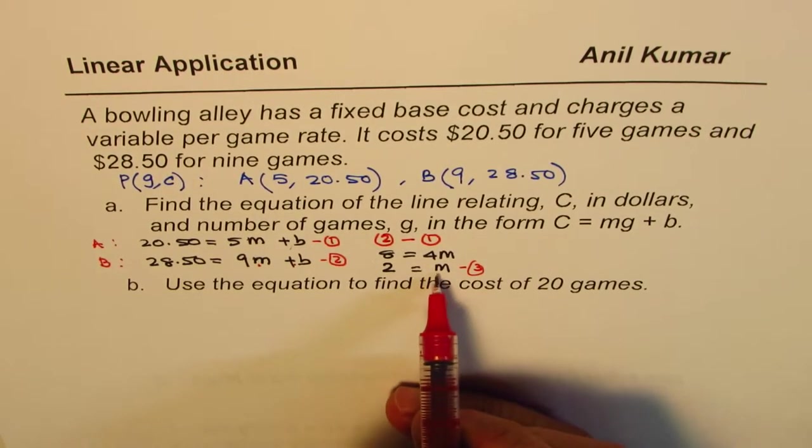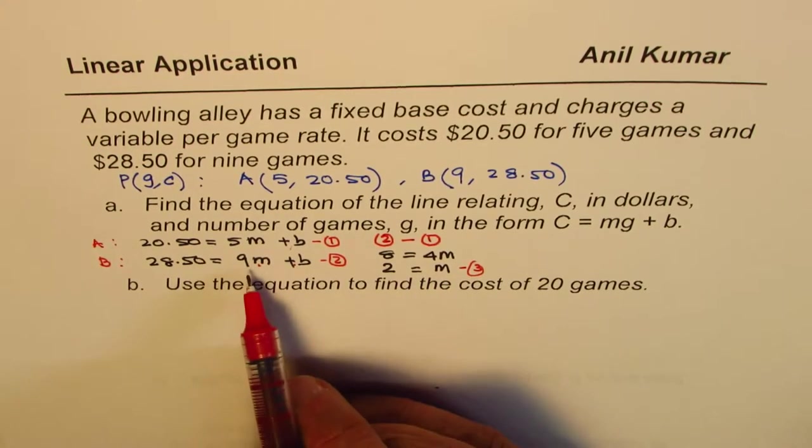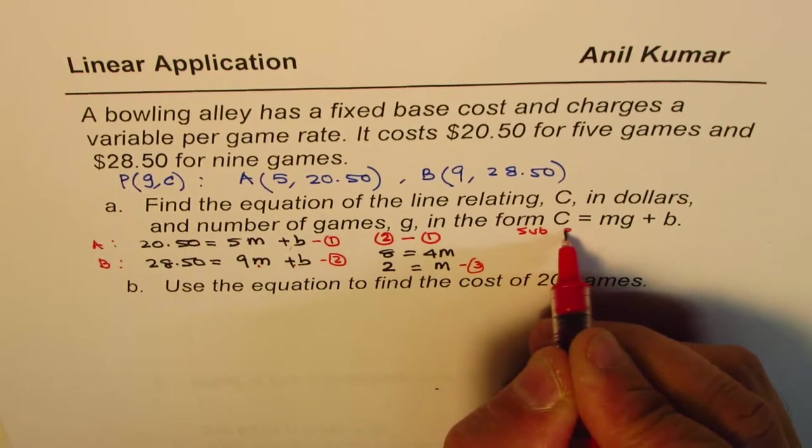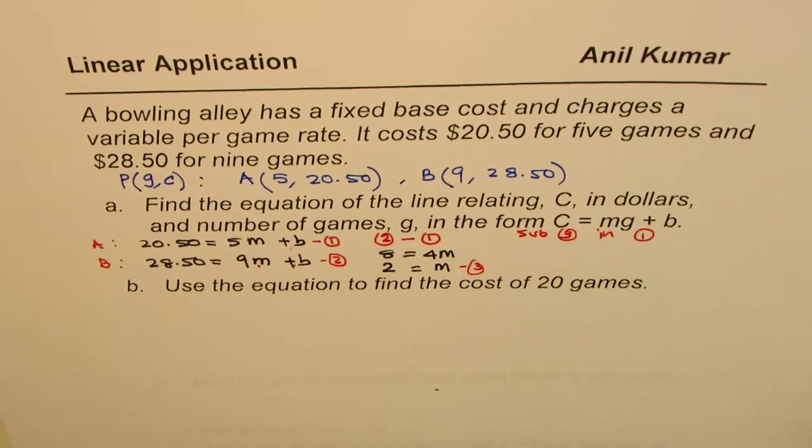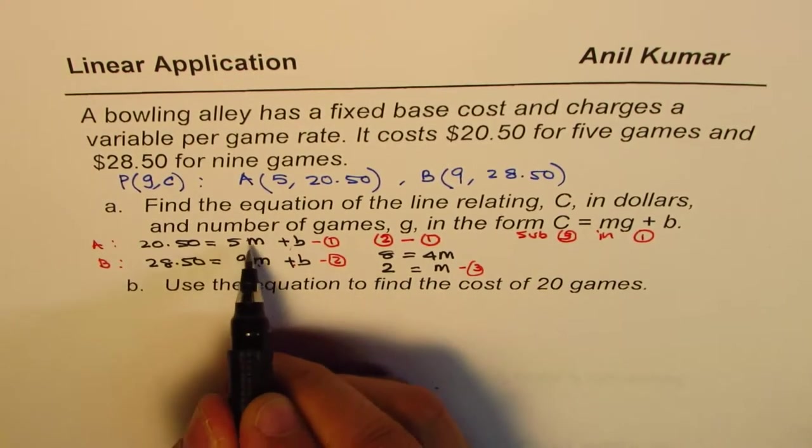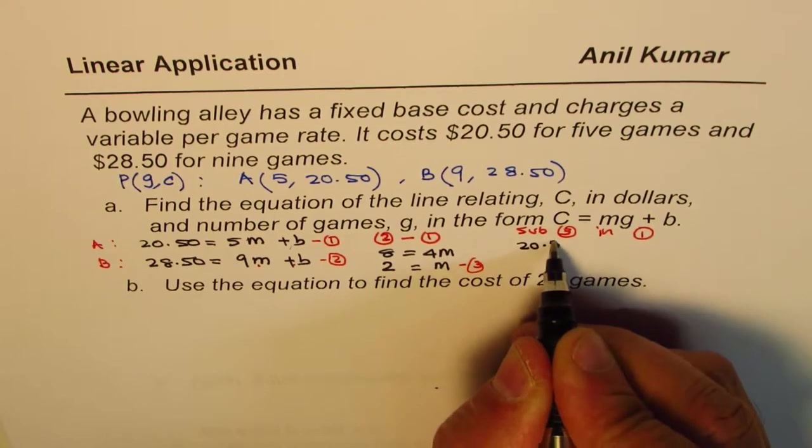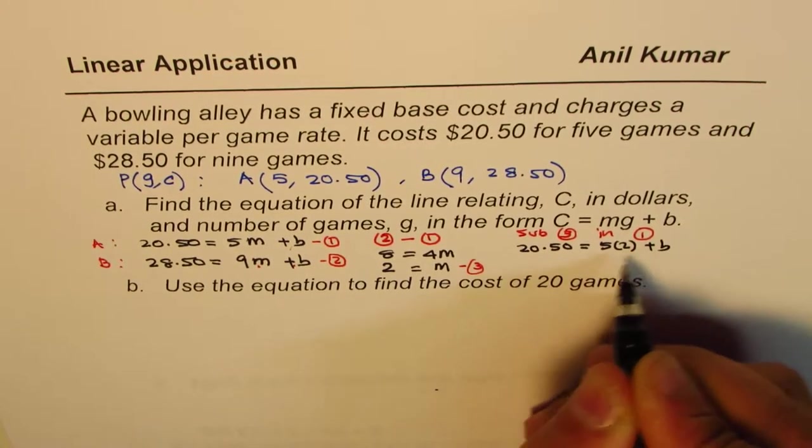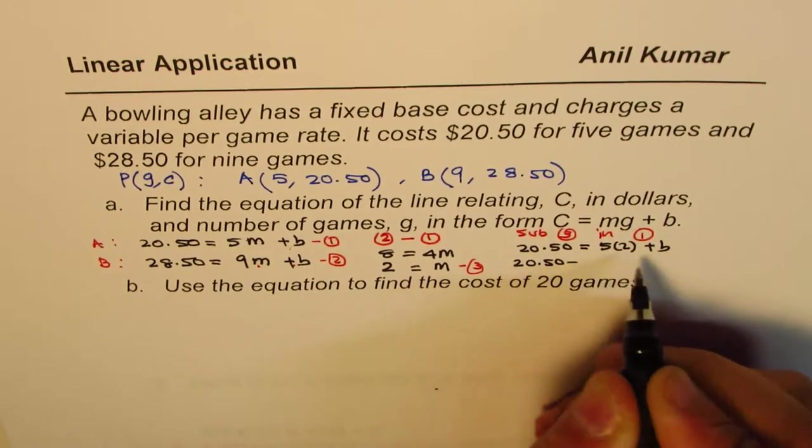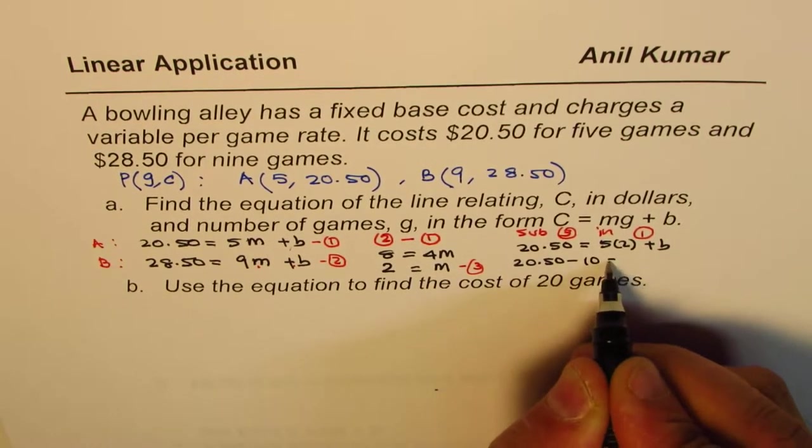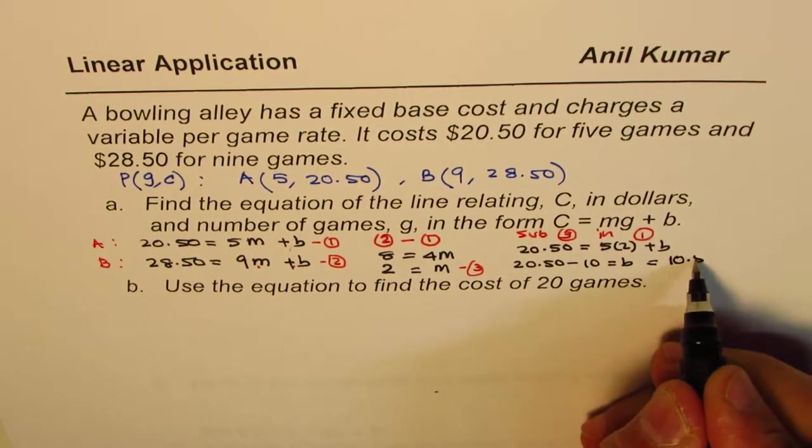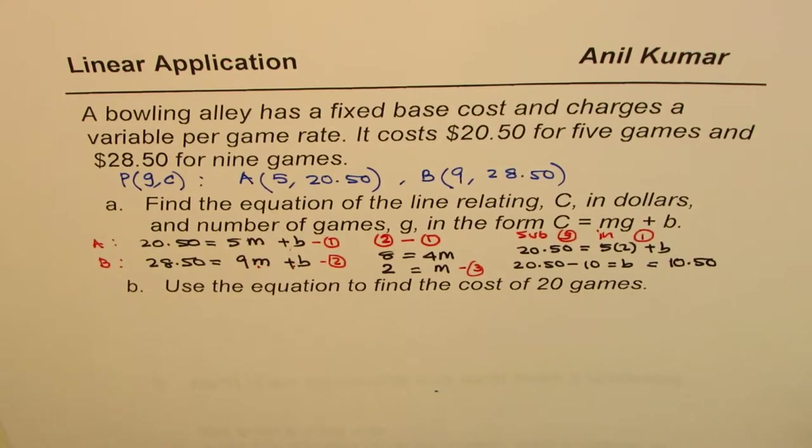Now, once you know M, you can substitute M in one of your equations and find B. So, we'll sub equation 3 in equation 1. It is that simple. I hope you find it simple. So, M is 2. Let's substitute 2 here. So, we have 20.50 equals to 5 times 2 plus B, or 20.50, take away 5 times 2 is 10, equals to B. And if you take away 10, you get 10.50. Simple as that. So, you get the value of B.